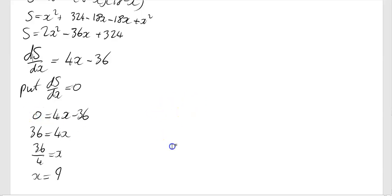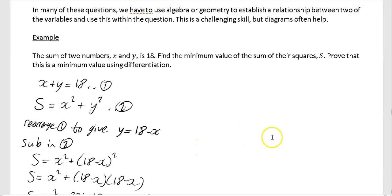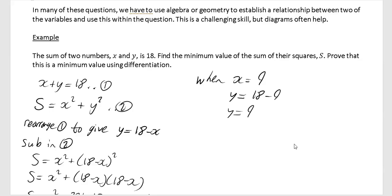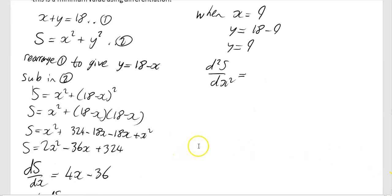We've got x equals 9. We need to find the corresponding y value. When x equals 9, y equals 18 minus 9, so y equals 9. Next, we have to prove it is a minimum. We differentiate ds/dx to get d²s/dx². Differentiating 4x minus 36 gives 4, which is greater than 0. Therefore it is a minimum value.